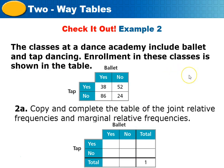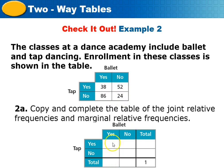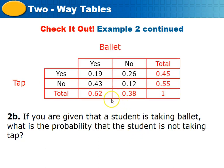Now let's do another example. Create the joint and marginal relative frequencies. First add up the total: 38 plus 52 plus 86 plus 24 equals 200. Divide each value by 200: 38, 52, 86, and 24 each divided by 200. Then add totals for 'yes' and 'no' in each direction — each pair must equal 1 to verify your work.